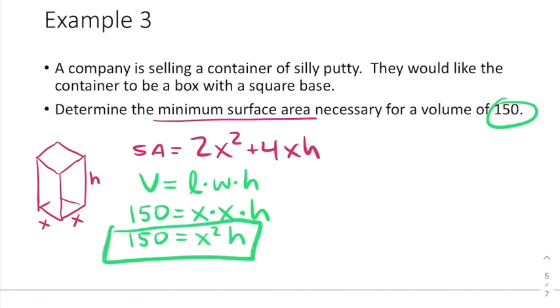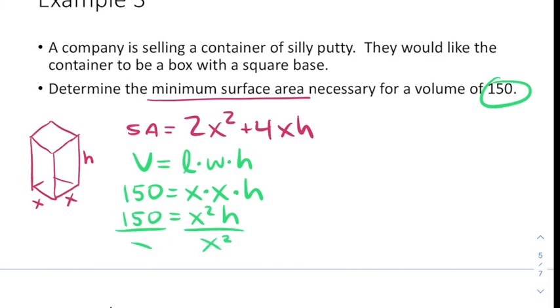Now the reason this is useful for us is because it includes x and h. That means we could get h alone here and be able to plug it into the other equation. So I'm going to divide both sides by x squared and I'm going to get h equals 150 divided by x squared.